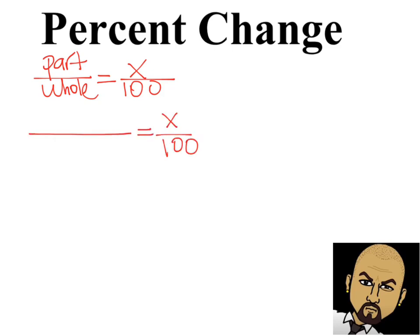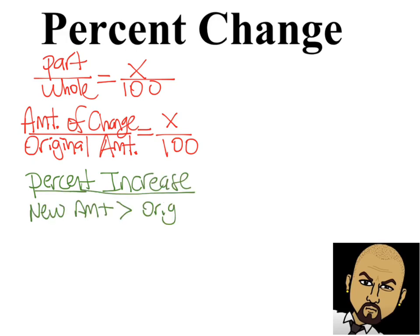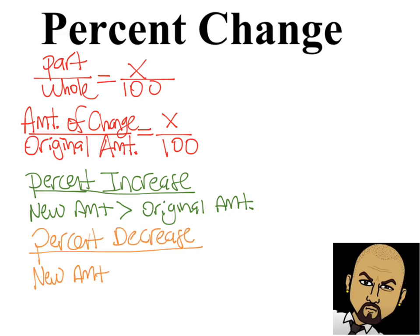In this case it's going to be a little bit different, because we're going to use the whole value as the original amount. So our original amount is going to be our whole — that's the value we started with — while our part is going to be the amount that the value changes. There are two types of changes: a percent increase, where the new amount is greater than the original amount, and a percent decrease, where the new amount is going to be less than the original amount.